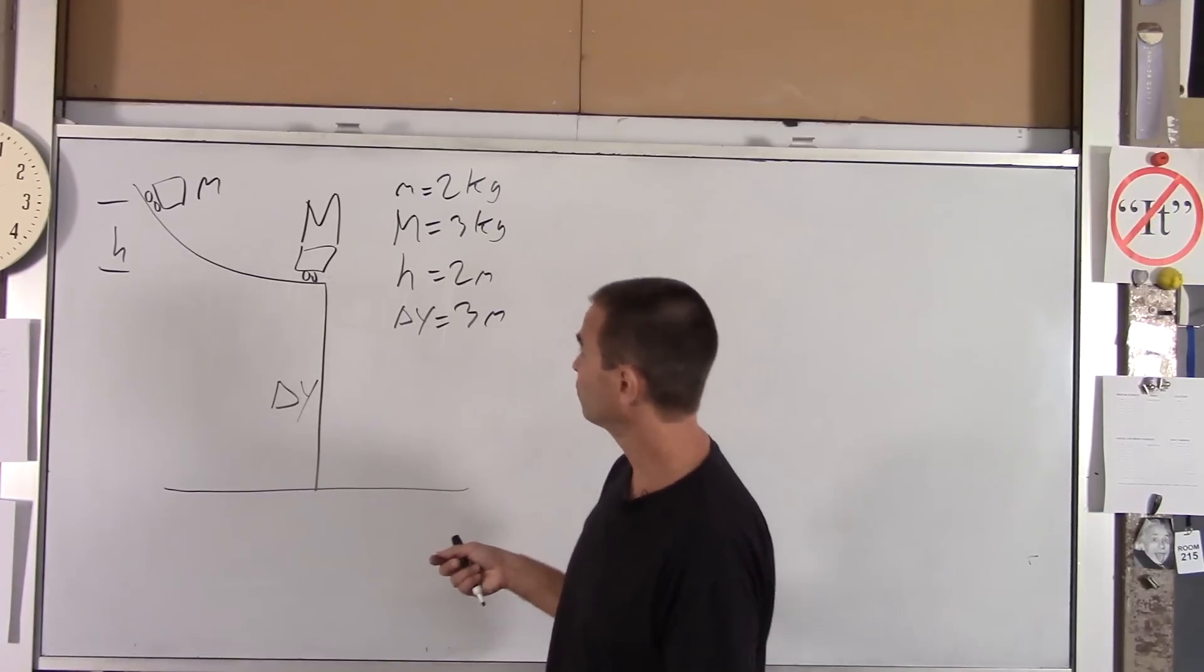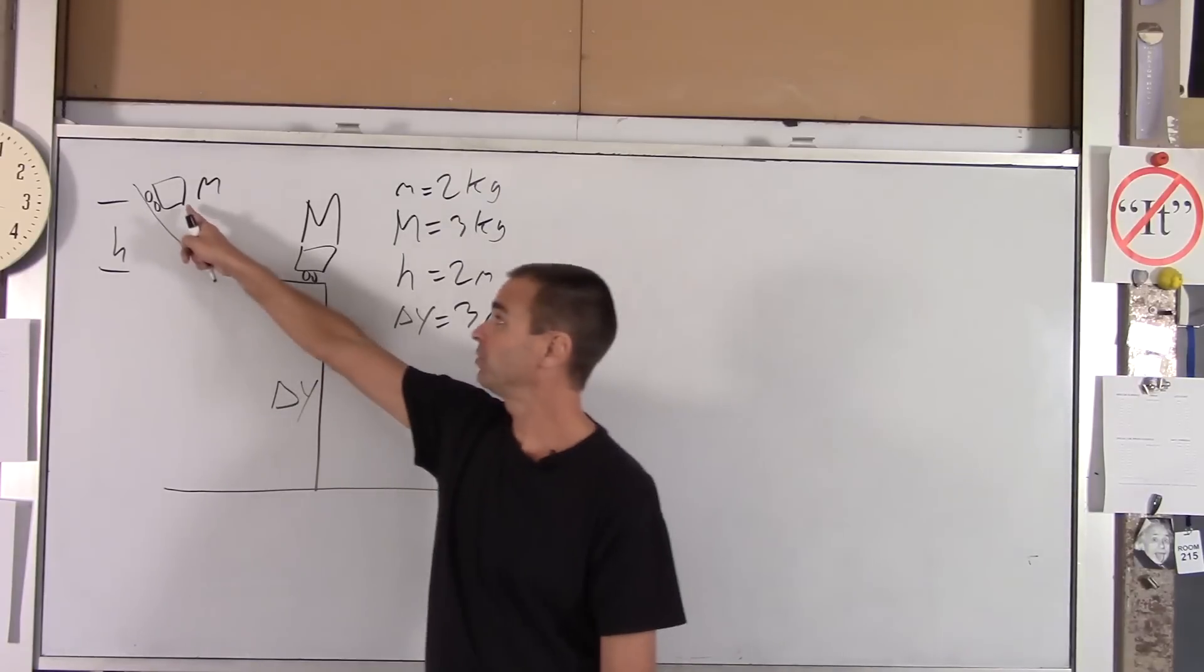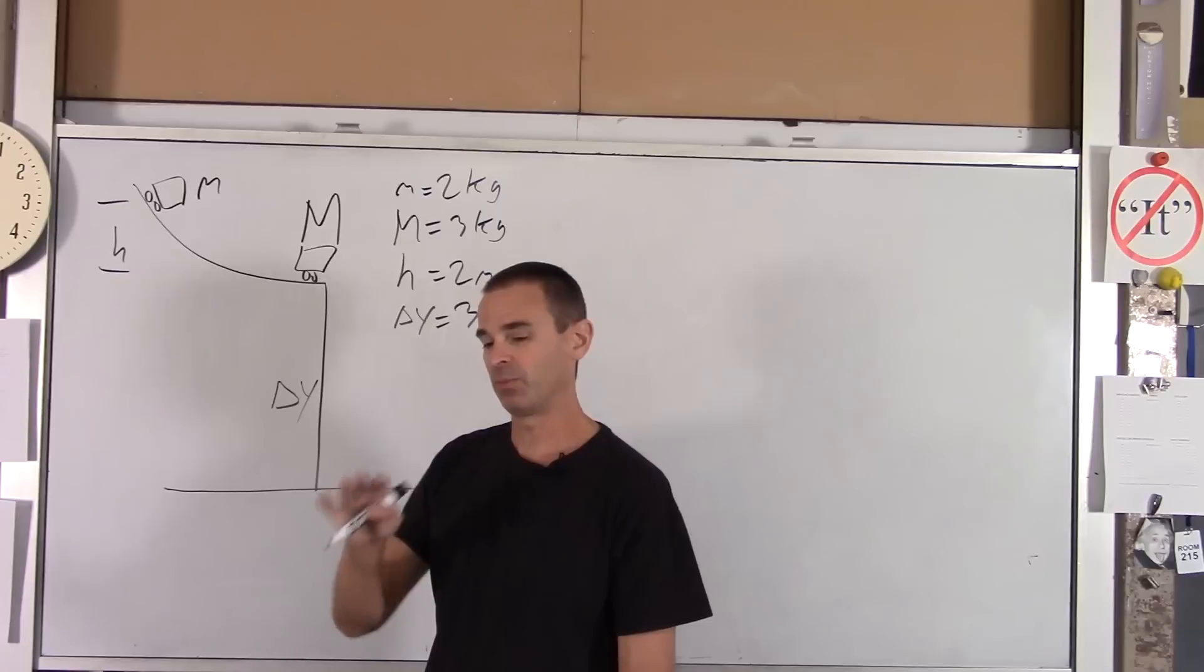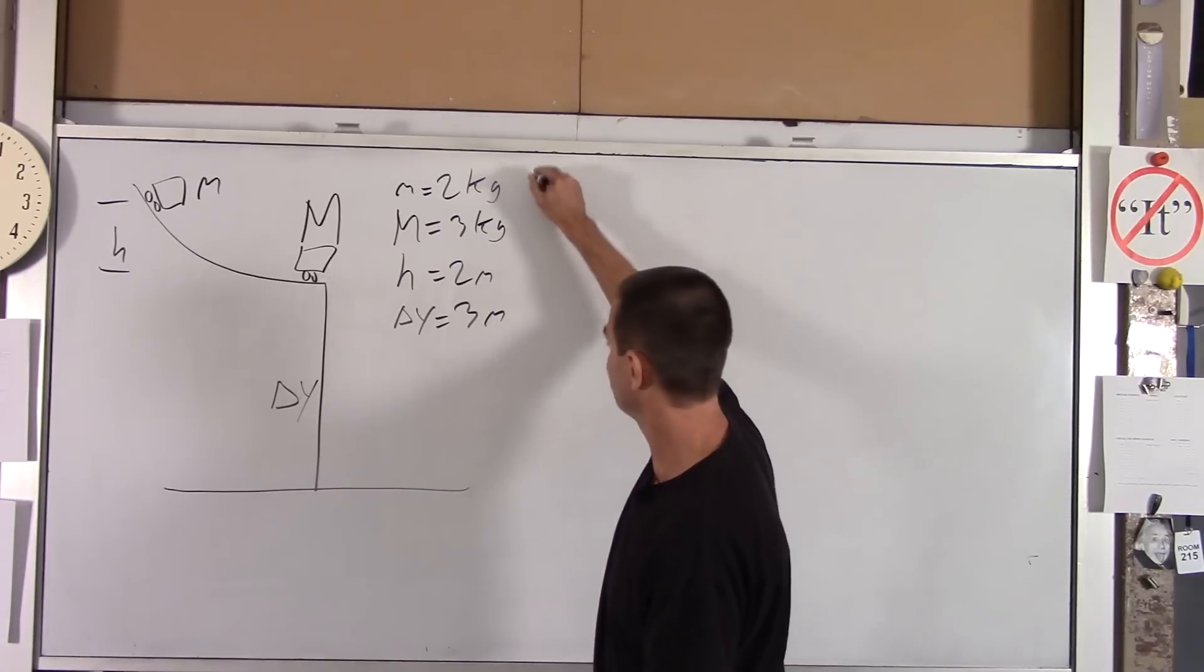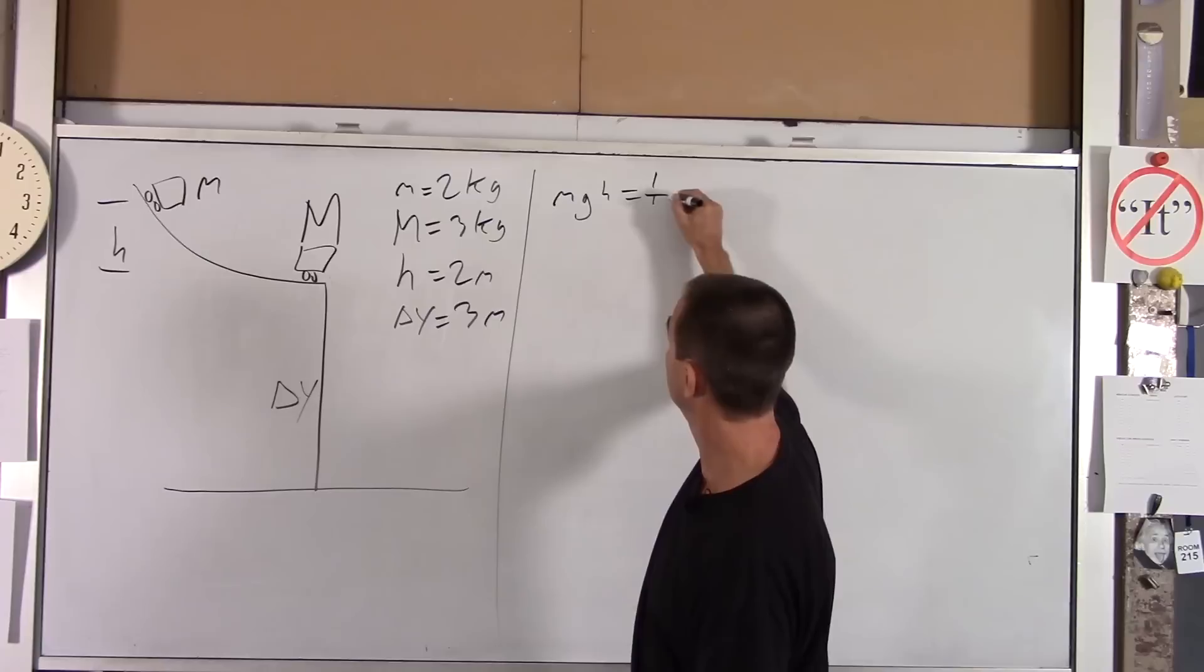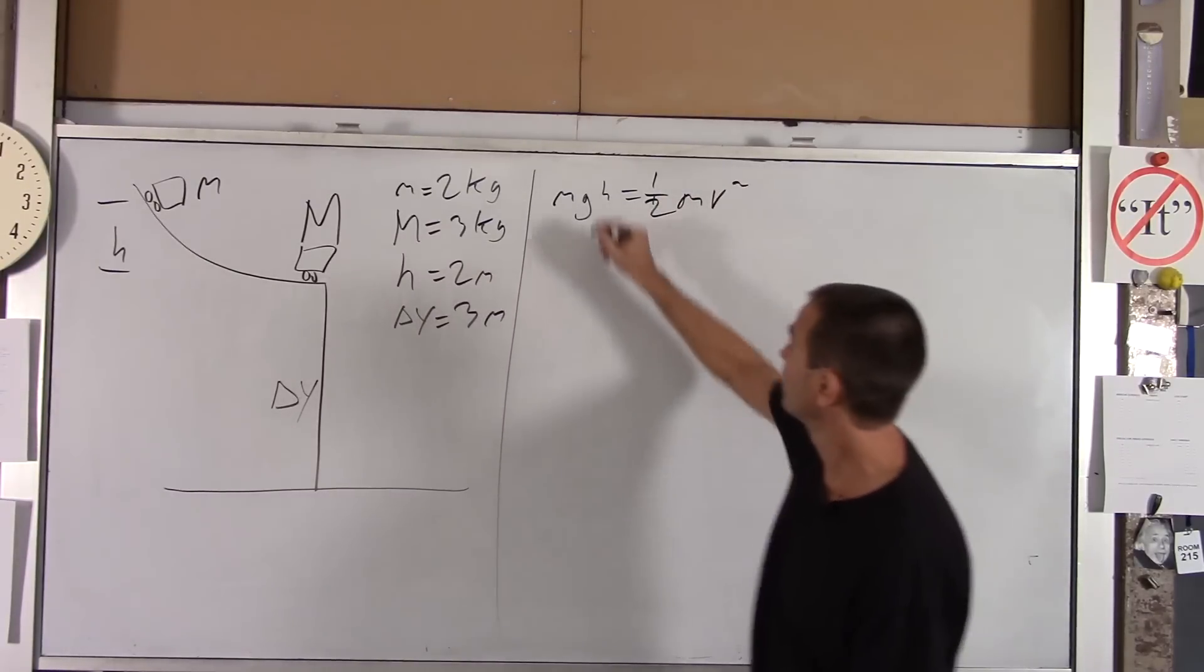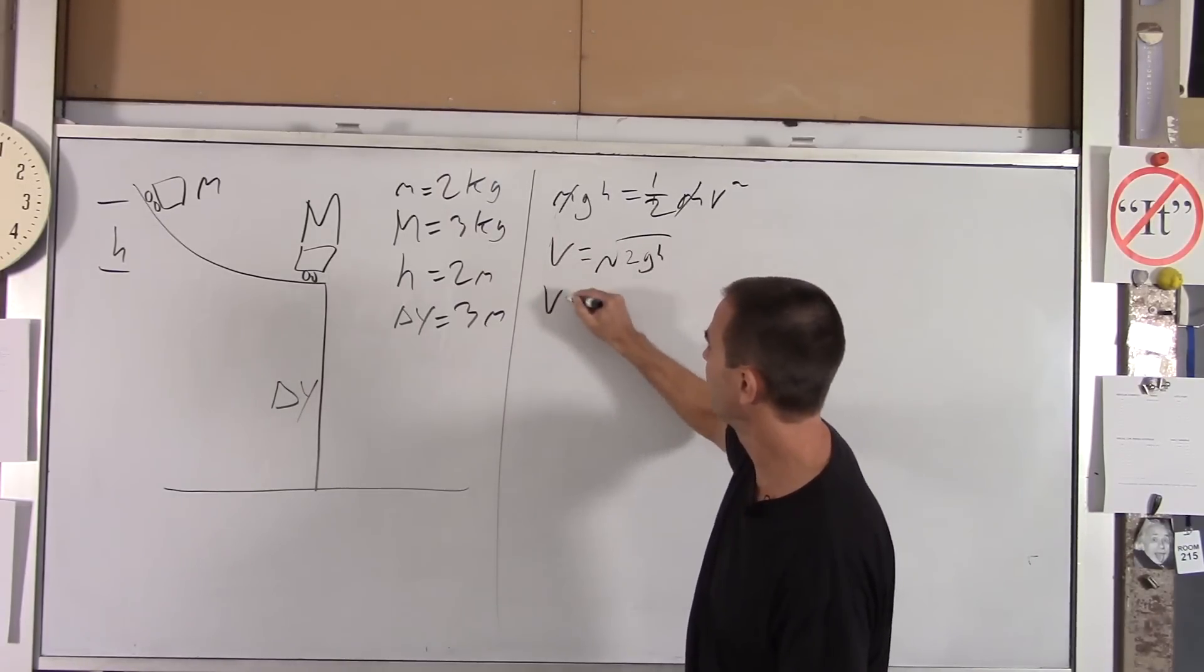So first things first, I've got to know how fast is that little dude going when he hits the big dude. Now I've got one object moving from A to B, so I'm going to use conservation of energy. When one object goes from one point to another, you use energy. So that one's pretty simple. You've got little mgh turning into kinetic energy, which is one half little mv squared.